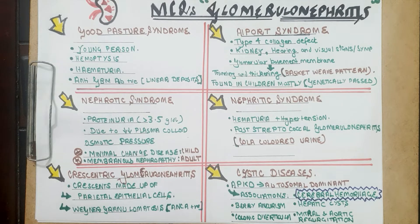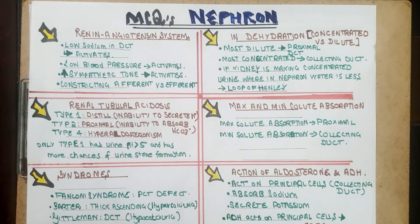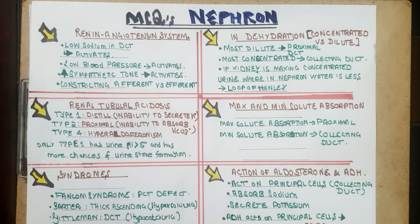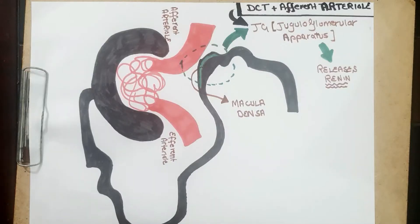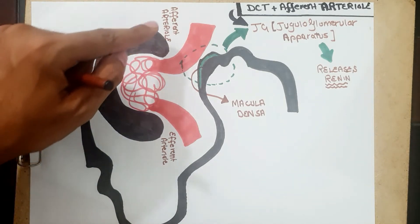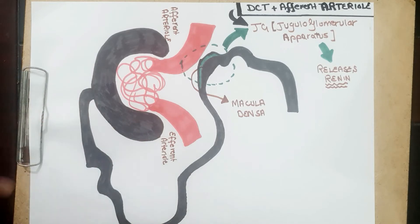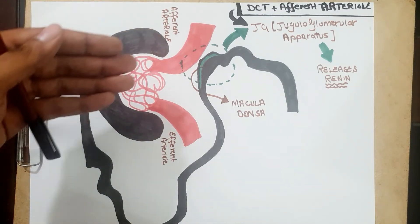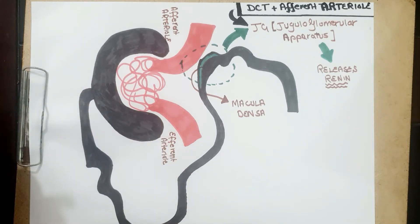That concludes the glomerulonephritis MCQs. Now we move on to MCQs about the nephron. The most common MCQs come from the renin-angiotensin system. The macula densa and the juxtaglomerular (JG) apparatus are essential to understand the renin-angiotensin-aldosterone system. In the diagram, you can see two arterioles — the afferent arteriole coming towards the glomerulus, and the efferent arteriole going away from it.